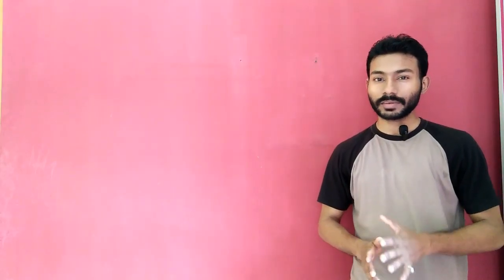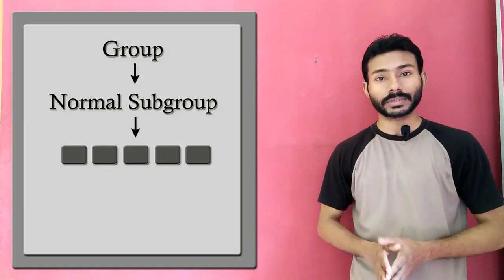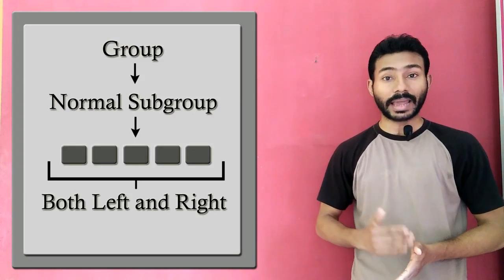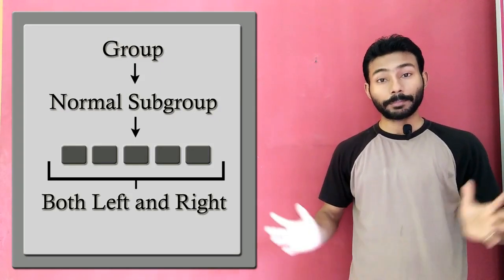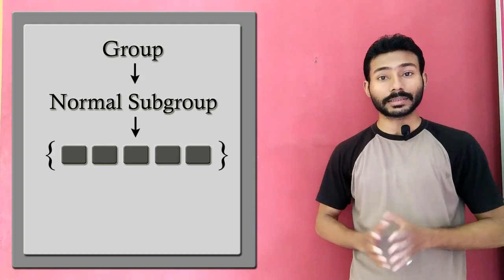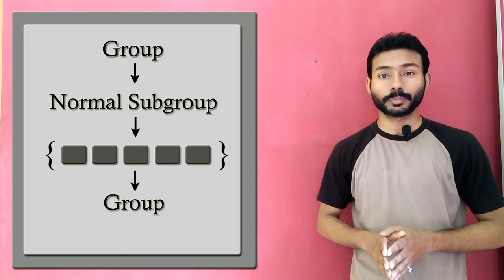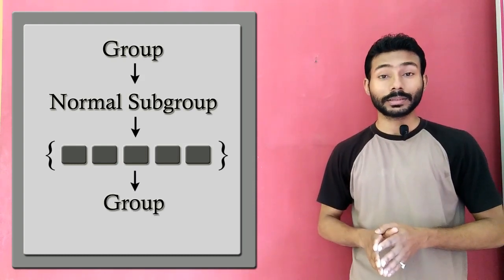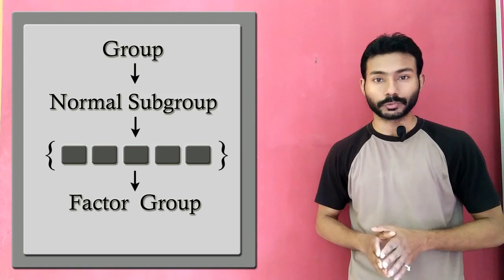So what have we learned? When we have a normal subgroup, the cosets obtained are both left and right cosets. If we pack all these cosets into a set, we get another group — we call this a quotient group or a factor group.